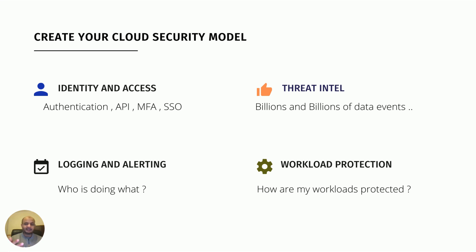Next is logging and alerting — an area where it's very easy to do too much or too little. Too many alerts and your team gets flooded; too few and you miss critical things. If you've already enabled benchmarking, translate the high-severity items into alerts and add your own based on your environment. After that, focus on workload protection: your VMs should spin up from hardened golden images with antivirus, hardening, and logging in place. Container images need to be scanned, and runtime protection must be enabled.